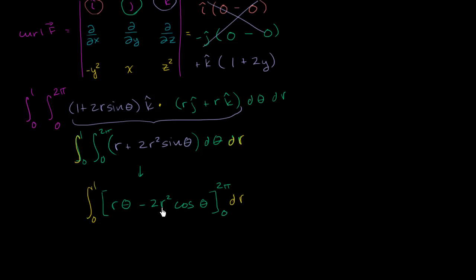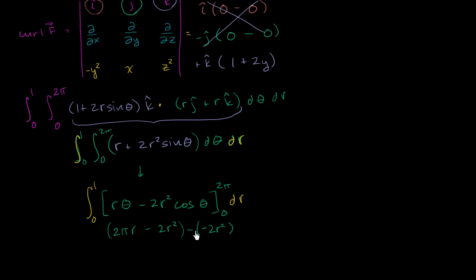Evaluating at 2π gives us 2πr — since cosine of 2π is 1 — minus 2r squared. Evaluating at 0 gives r times 0 which is 0, and cosine of 0 is 1, so that's negative 2r squared. The negatives combine to give a positive, but then we have negative 2r squared and plus 2r squared, which cancel out. So this whole thing simplifies nicely to a simple definite integral from 0 to 1 of 2πr dr.